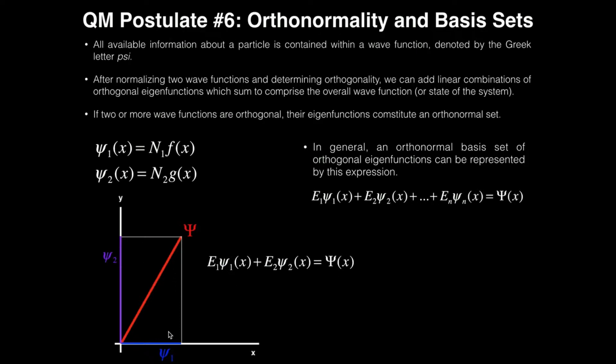In other words, in this example, ξ1 and ξ2 comprise what we call an orthonormal set or a basis set, and you don't just have to have two, you can have many. So here, I have a general expression that represents an orthonormal basis set for these eigenfunctions. So E1 times ξ1 plus E2 times ξ2, and you can have so many up to En times ξn, and if you put all those in a linear combination together, you get this basis set, which is represented by this big ξ.